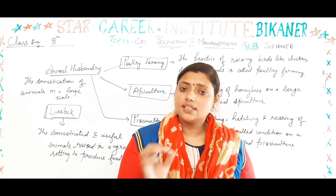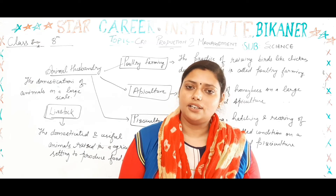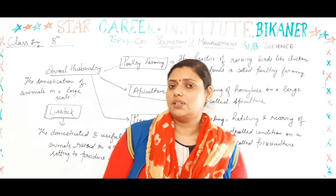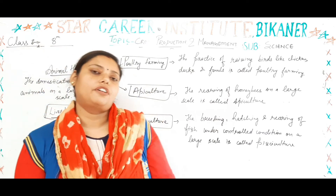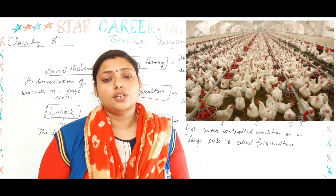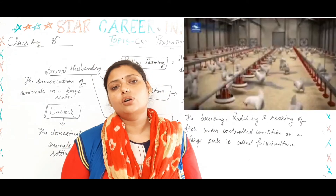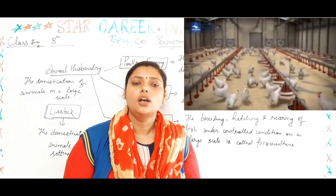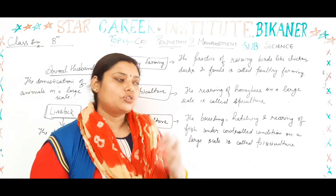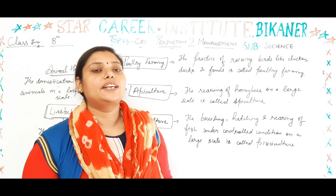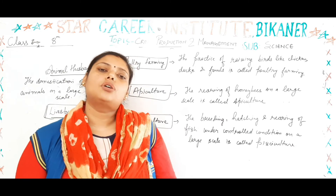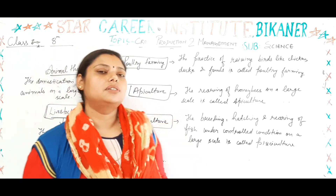The care and domestication of these animals is called animal husbandry. There are also many branches of animal husbandry. First, let's talk about poultry farming. Poultry farming is a process in which chickens, fowl, or ducks are cared for and raised so that we can obtain eggs and meat. The practice of raising birds like chickens, ducks, and fowl is called poultry farming.